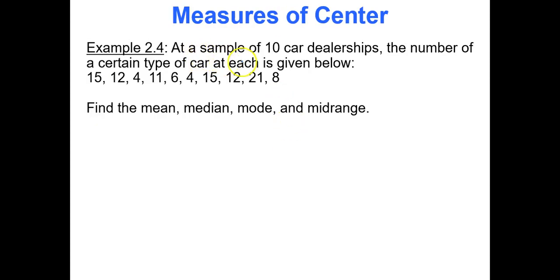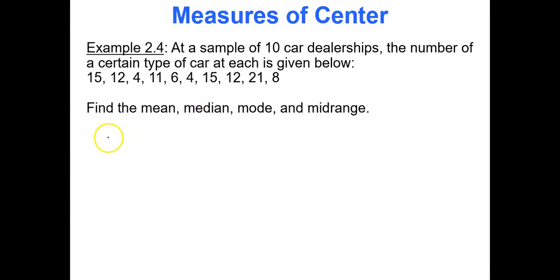In this example, we have a sample of 10 car dealerships and the number of a certain type of car each has: 15, 12, 4, 11, 6, 4, 15, 12, 21, and 8. We want to find the four measures of center — mean, median, mode, and midrange.